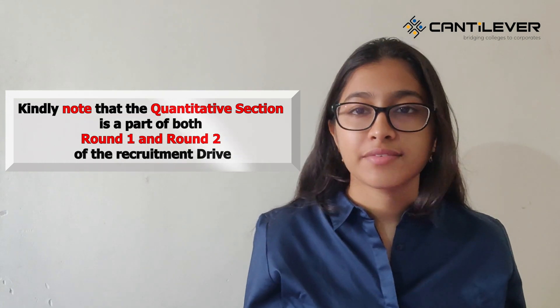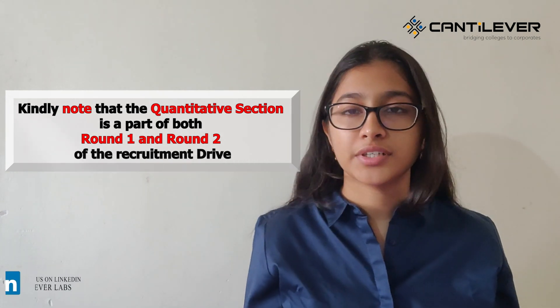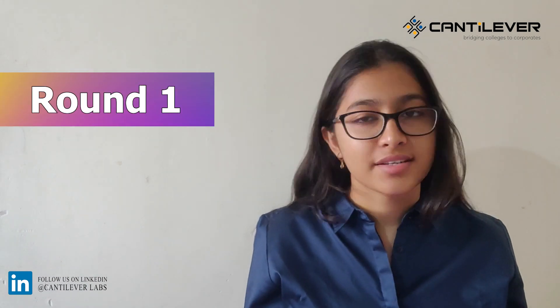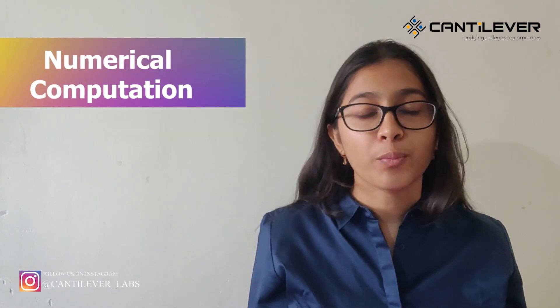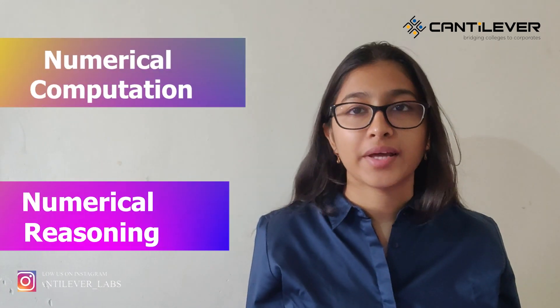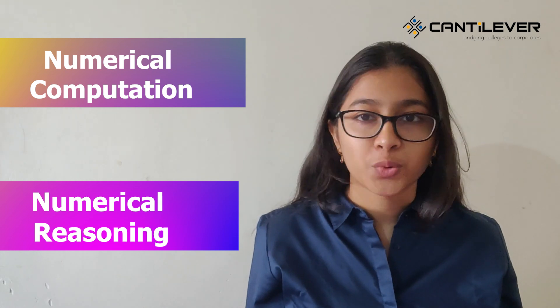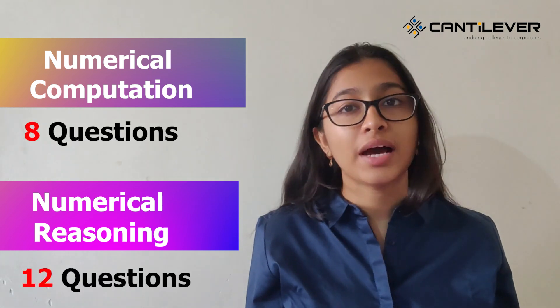Kindly note that the quantitative section is a part of both round 1 and round 2 of the recruitment drive. For round 1, which is the aptitude test, you will have 6 sections in total and 66 questions to solve in 90 minutes. You can switch between sections, but remember there is negative marking, so solve accordingly. The quantitative section comprises the first two sections of round 1: section 1 is numerical computation and section 2 is numerical reasoning, with 8 questions and 12 questions respectively.